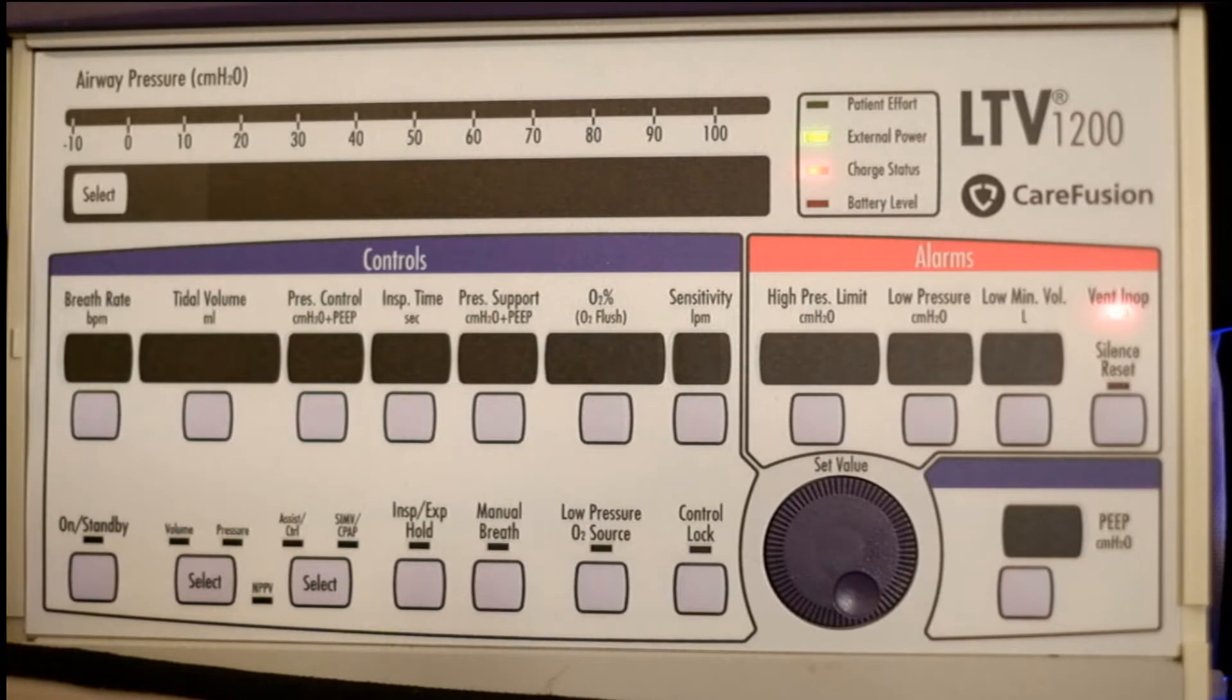The first thing we have to understand with the LTV-1200 regarding BiPAP is that it's an additive. With BiPAP, there's additive and absolute. An absolute BiPAP is usually what you'll find in the hospital, a standalone BiPAP machine. What that means is if you set it at 15 for pressure support and PEEP of 5, they're going to receive 15 over 5, exactly what it says. It's absolute.